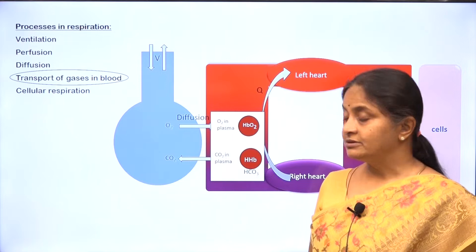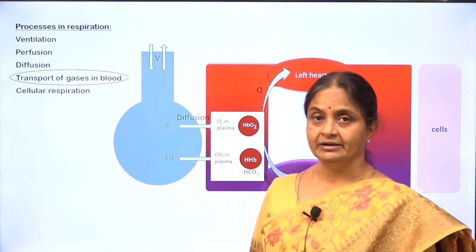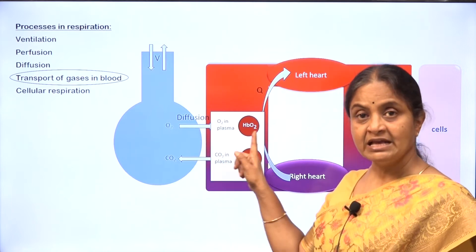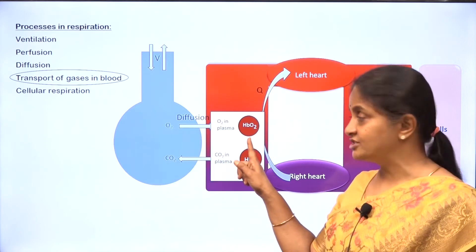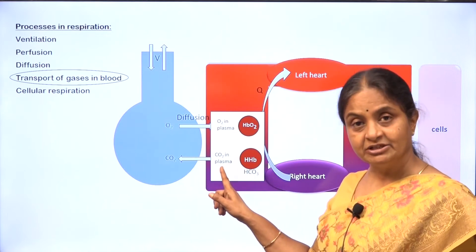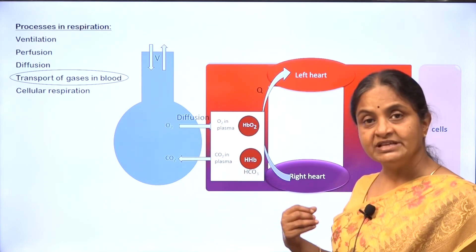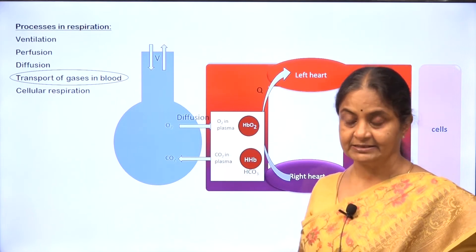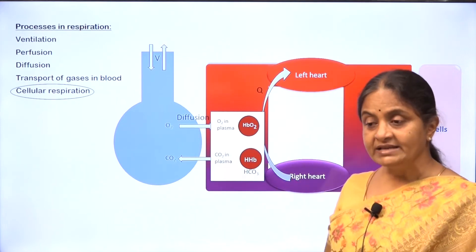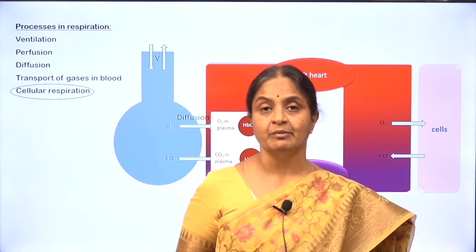We should learn about how gases are transported in blood. Oxygen is transported in the dissolved form in plasma as well as in combination with hemoglobin as oxyhemoglobin. Carbon dioxide also travels in the dissolved form as well as in certain other forms as processed by the red blood cells. Ultimately, we have to learn why cells require oxygen and how they generate carbon dioxide.